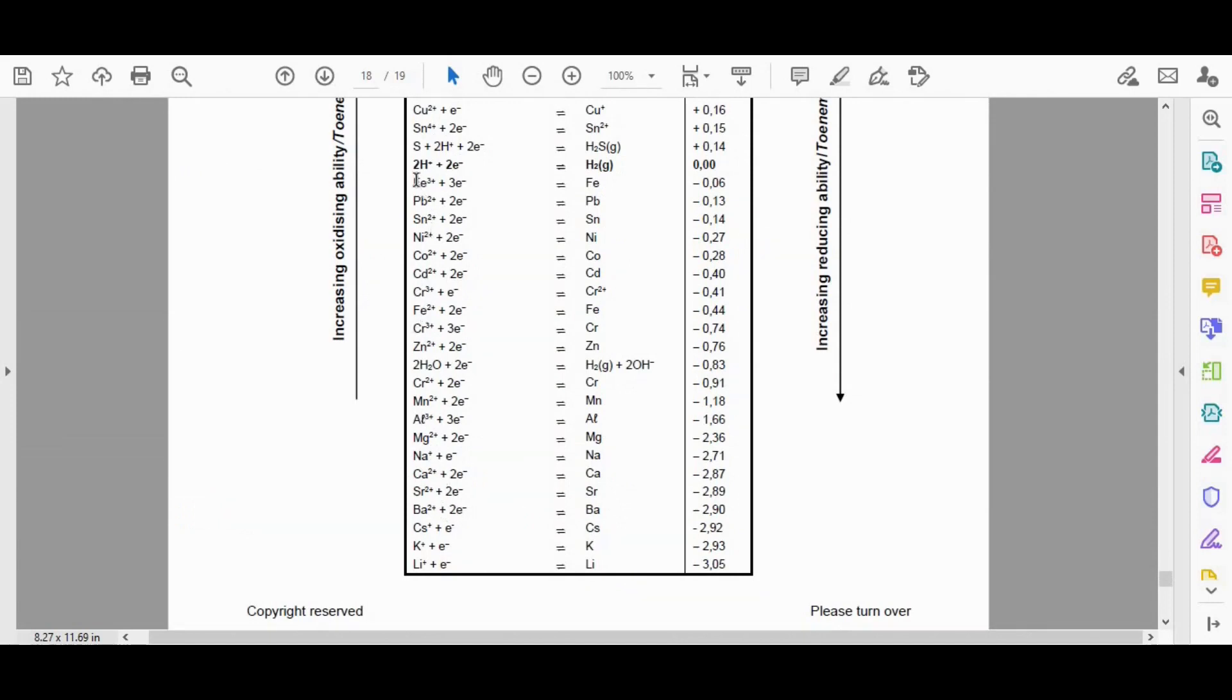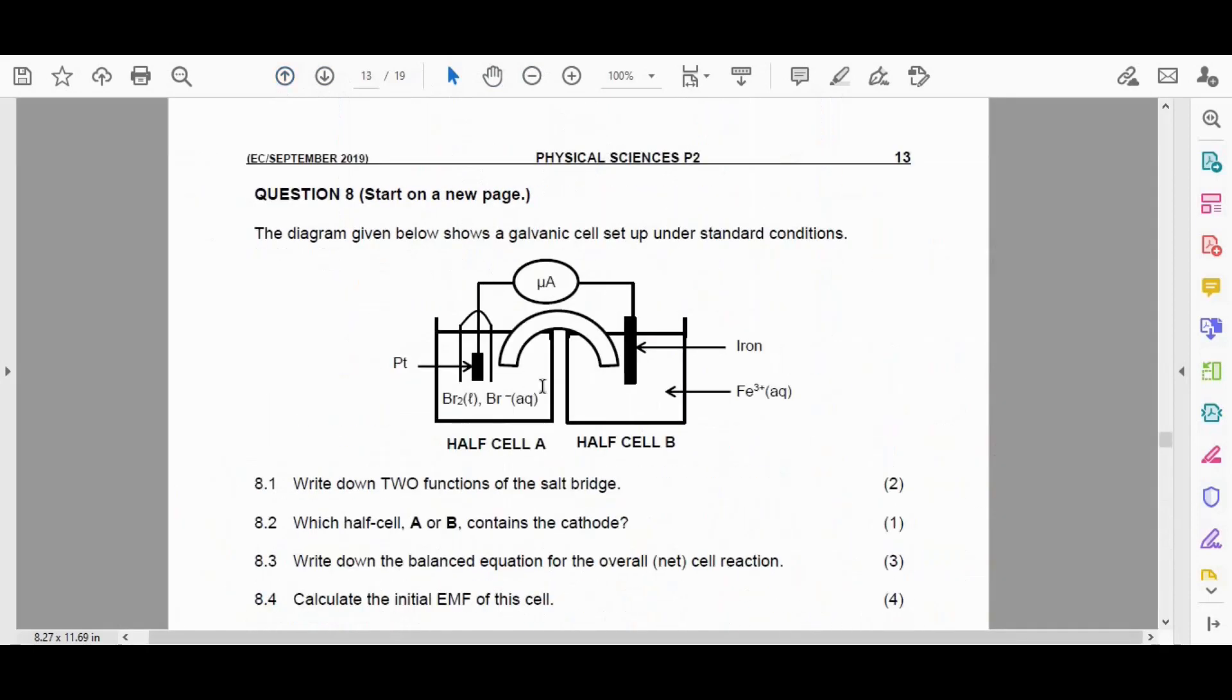So if we go and find that on our periodic table, there's the 2 plus, there's the 3 plus. All right. If we have 3 plus plus 3 electrons, we get a value of negative 0.06.